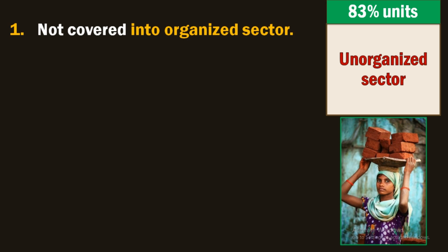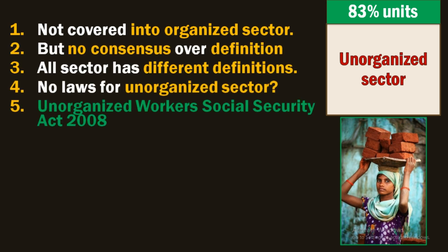If such a question comes to you anywhere — does the government not take care of them at all? The answer is no, that is not the case. The government does take care of them in its own way — runs some schemes, some policies, where schemes are launched for them. To protect such workers, the government passed a law in 2008 called the Unorganized Workers' Social Security Act 2008.